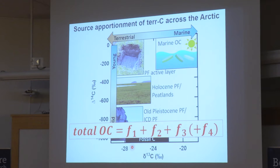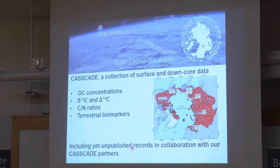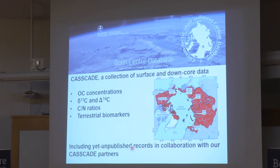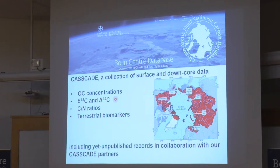If we have total organic carbon for a sediment — maybe 1 to 2% in many marine samples — and we know the δ13C and the Δ14C, we can do a source apportionment. We do mass balance and can calculate the individual fractions. CASCADE — Circumarctic Shelf Sediment Carbon Database — is a collection of surface and downcore data, including data generated over the last couple of decades from many studies in the Arctic Ocean focusing on marine sediments. Very important parameters are organic carbon concentrations, δ13C, δ14C, C:N ratios, and also terrestrial biomarkers used to understand source and degradation.